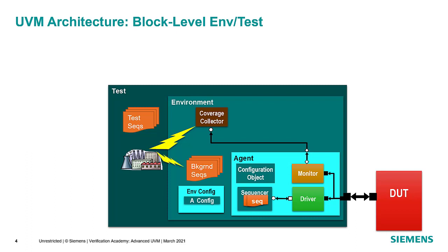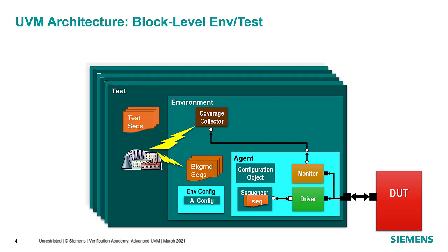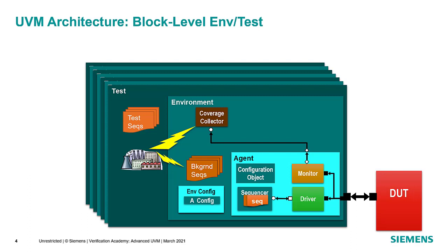You can also use the factory to change the type of background sequence run by the environment. We'll see how the factory and configuration work in the next session. Since tests are also components, you can have a library of tests, each using the same environment but configured differently or running different sequences with different coverage collectors. Tests become relatively simple, just specifying sequences or configuration, while execution is automatically handled in the environment and agents.